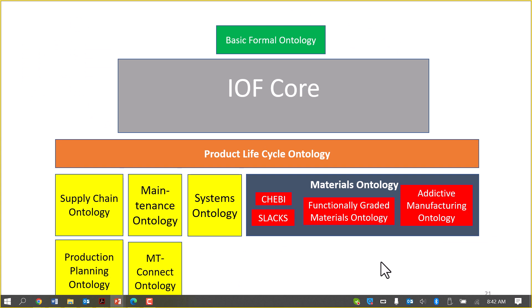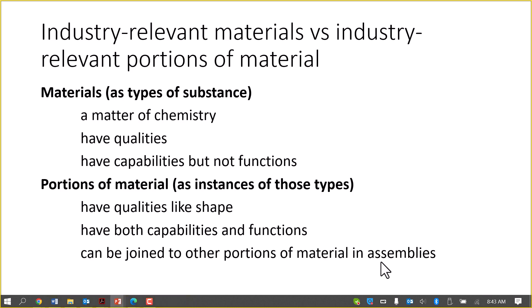Now we'll talk a little bit about the IOF. This is the general strategy: we have the IOF core, and then we have working groups whose ontologies are based on the IOF core and are already in a mature state — shown in the yellow boxes. We also have various materials ontology efforts which are in a mature state but do not form a harmonious whole because they were developed independently, leading to overlap problems. There are other materials ontologies we intend to use, including the EMMO ontology, where we hope to find a way of using their content compatibly with the IOF core.